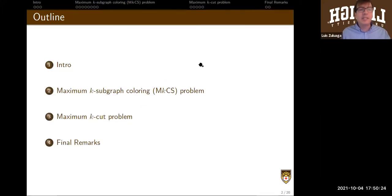Okay. So the main idea of the talk is to give an introductory idea of the work we're doing, and then we'll show some results associated to two constrained combinatorial optimization problems. The max k-subgraph coloring problem and maximum k-cut problem. And I will end with some final remarks and time for questions.